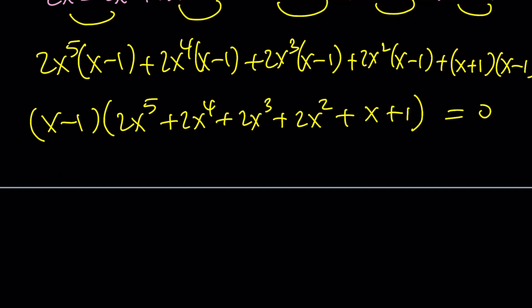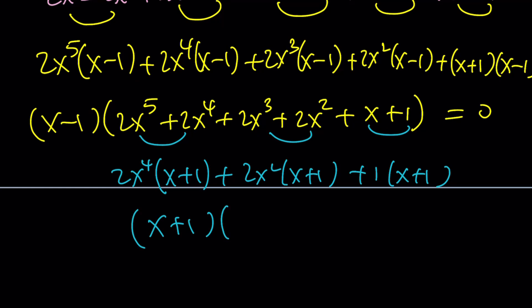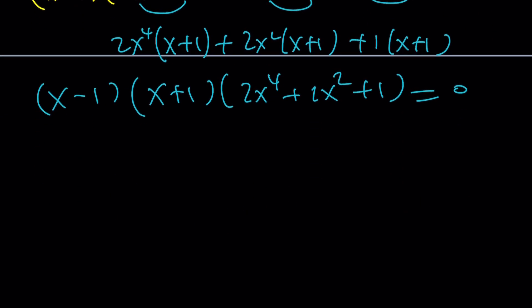This is also factorable by grouping. It's like groups within groups. It's kind of crazy, right? We can take out 2x to the fourth, x plus 1. And we can take out 2x squared, x plus 1. And we can take out 1x plus 1. And eventually, this is going to give us x plus 1 times 2x to the fourth plus 2x squared plus 1. And we have an x minus 1. And we already had an x to the fourth. Which means that we get the exact same thing. Nice! Same idea.